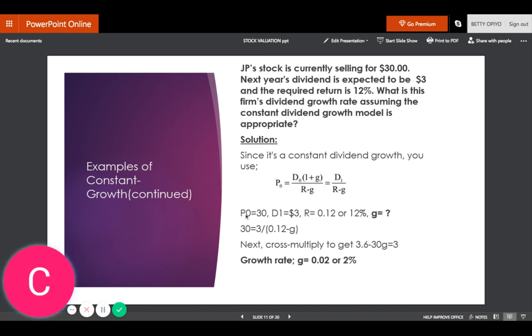The current price P0 is $30. Next year's dividend D1 is expected to be $3. R, the required return, is 12%, so R will be 0.12 as a decimal because we'll be using it in our equation. We do not have g; that is what we are asked to find.